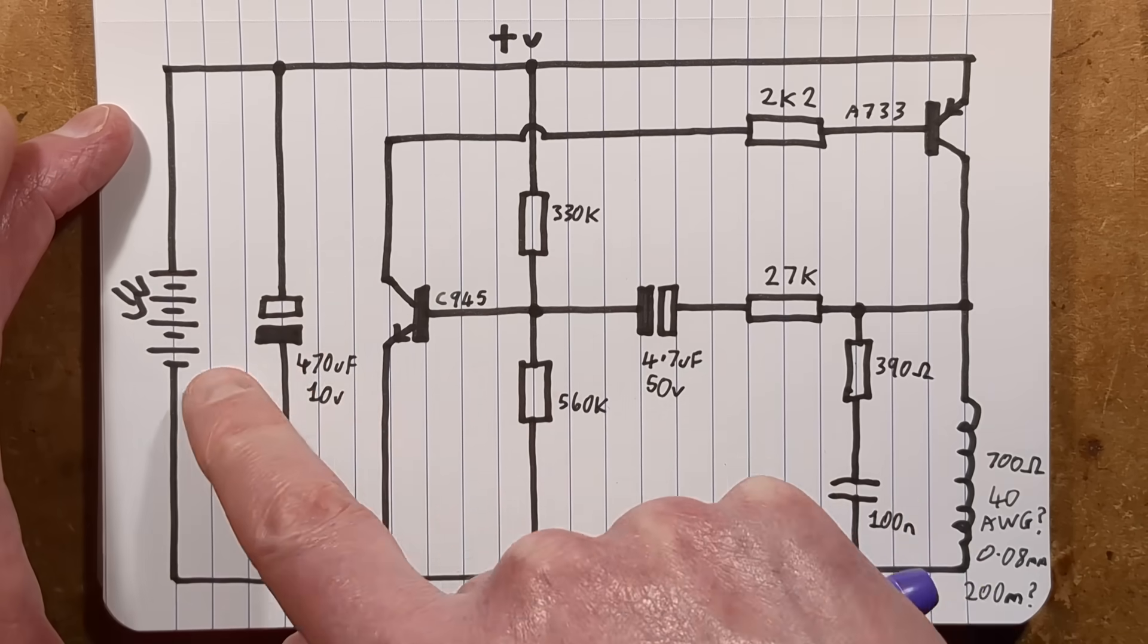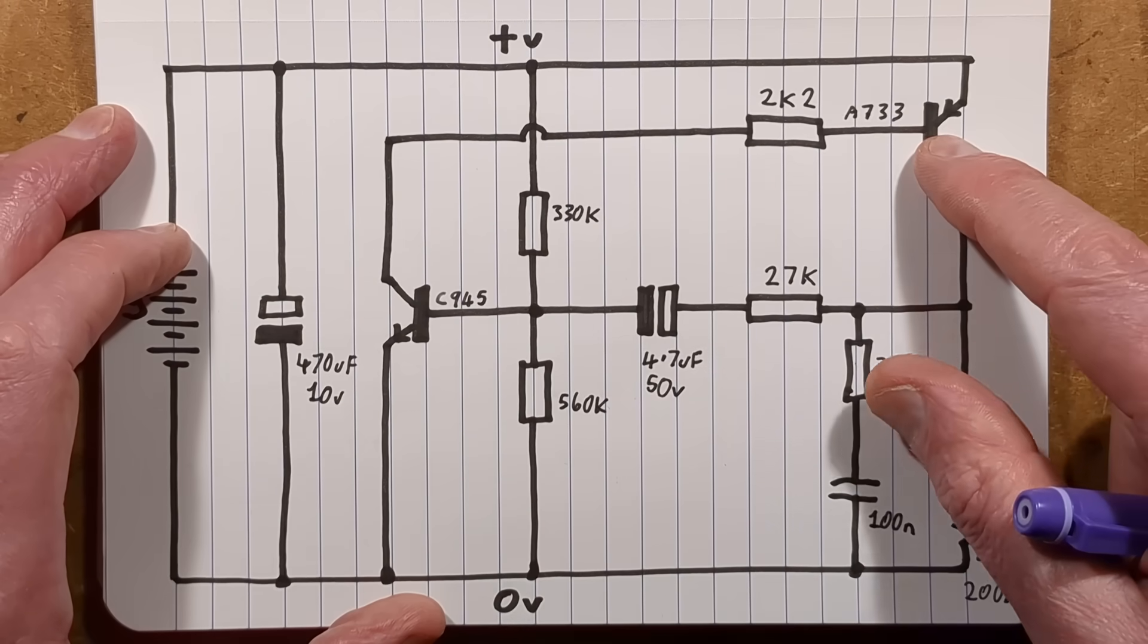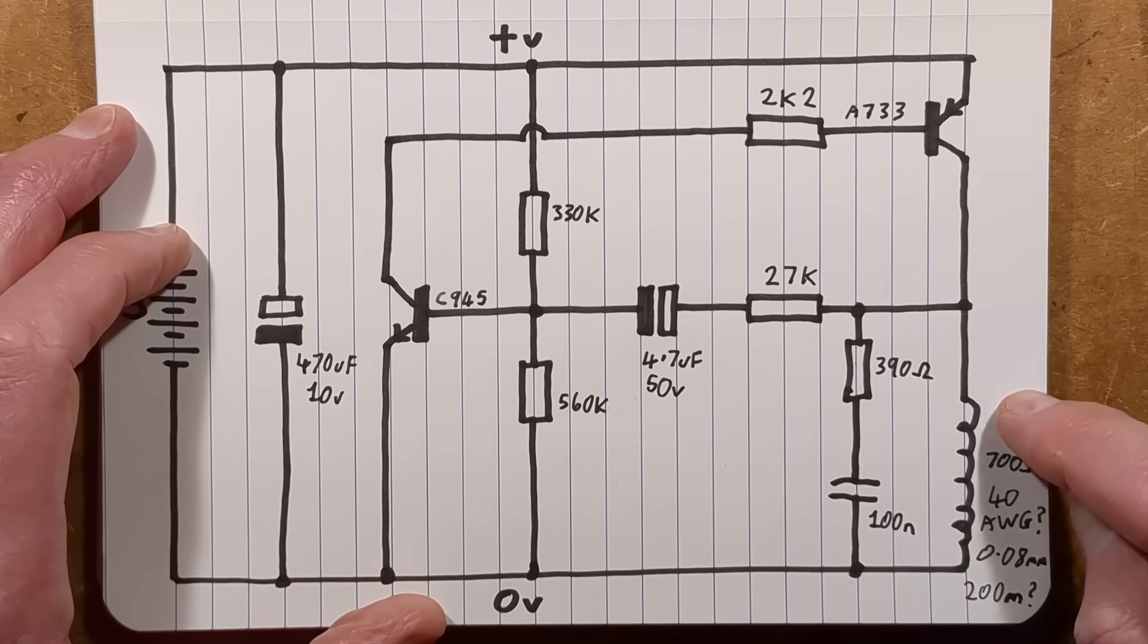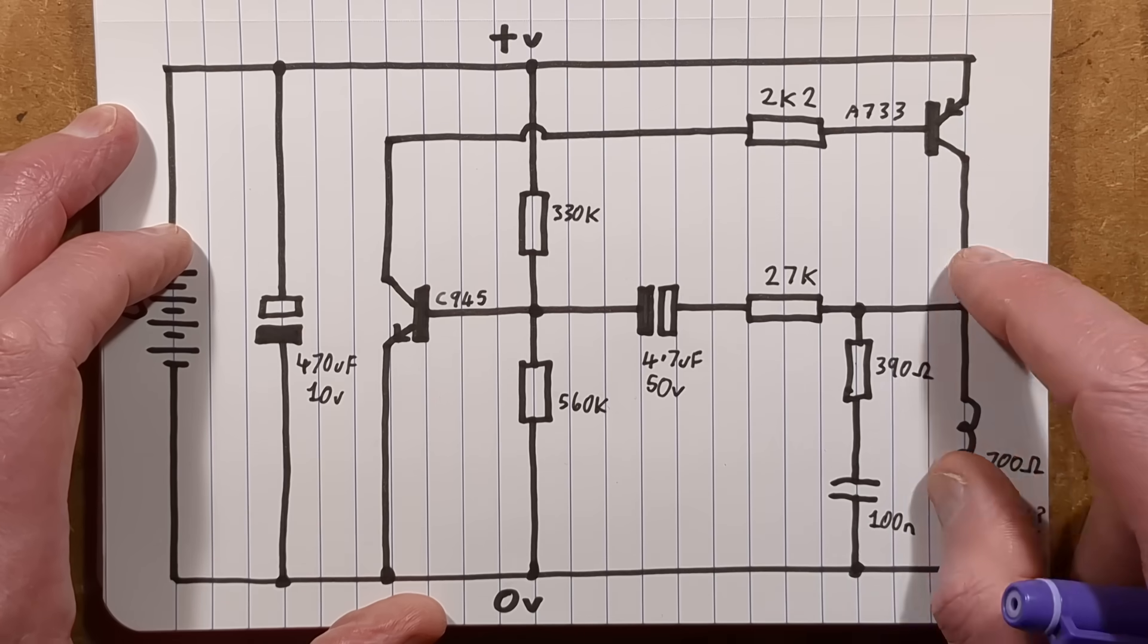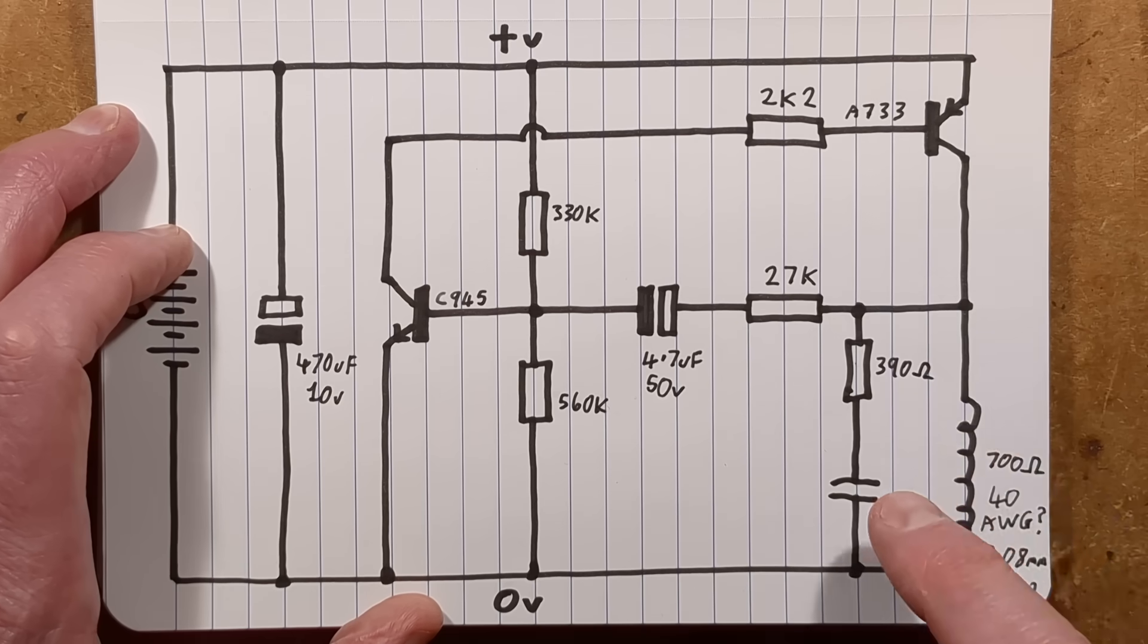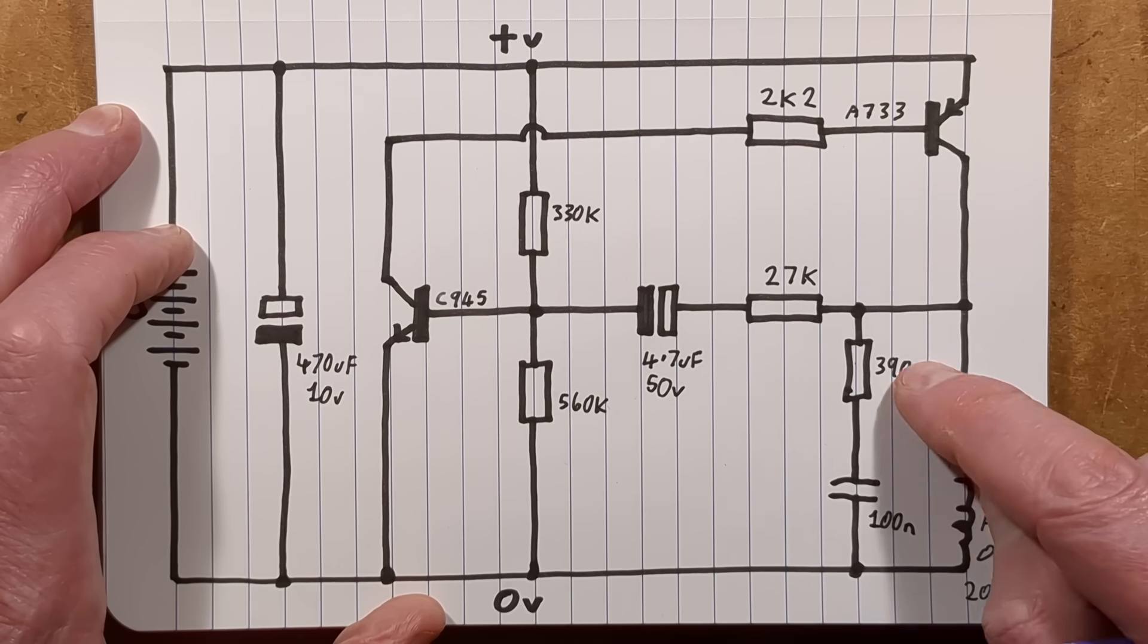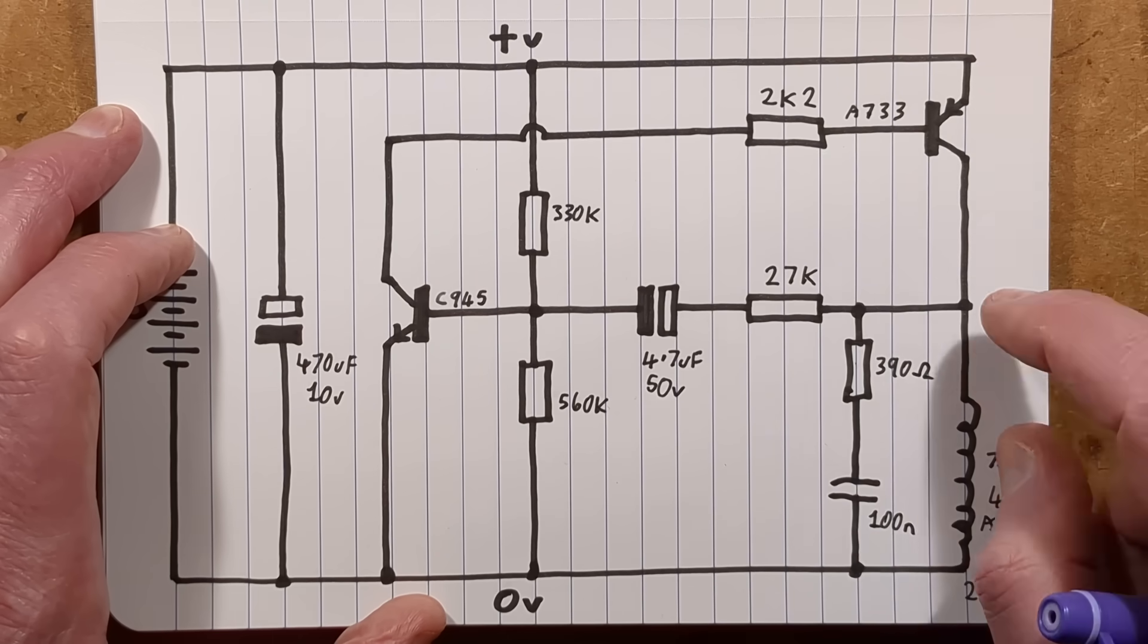There is the solar panel and a reservoir capacitor, 470 microfarad, 10 volt. Then there's a PNP transistor and an NPN transistor. The PNP transistor does two things - it switches the current through the coil. To protect against the collapsing field producing the back EMF spike, the flyback spike, it has a snubber network across it, 390 ohm and 100 nanofarad capacitor just to clamp that voltage spike to protect the transistor.